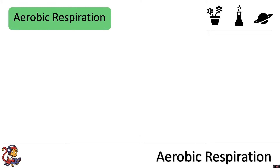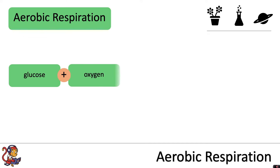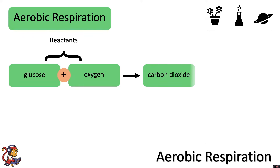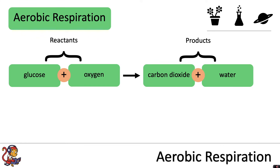The equation for respiration is: glucose plus oxygen — the reactants — produce carbon dioxide plus water, which are the products. Sometimes you will also see '(+ energy)' in brackets, because respiration is the release of energy from glucose in cells. But because energy is not a molecule, we don't write it in the normal equation; if you do include it, make sure you include it in brackets.